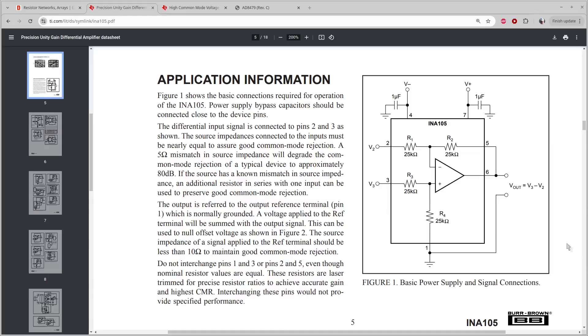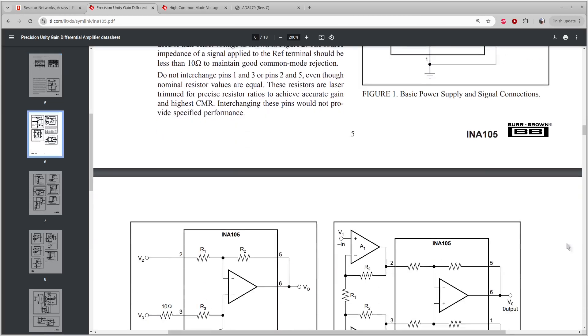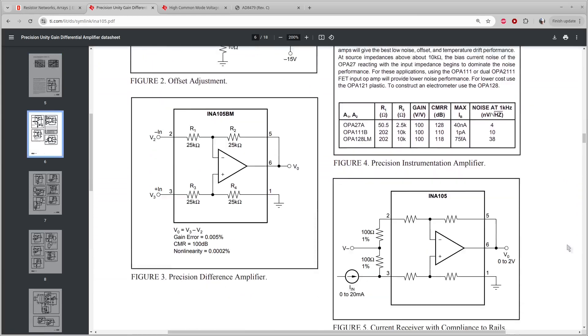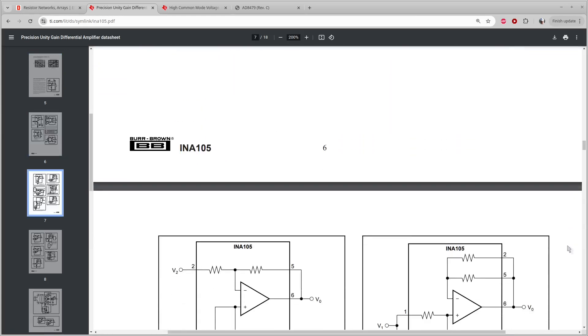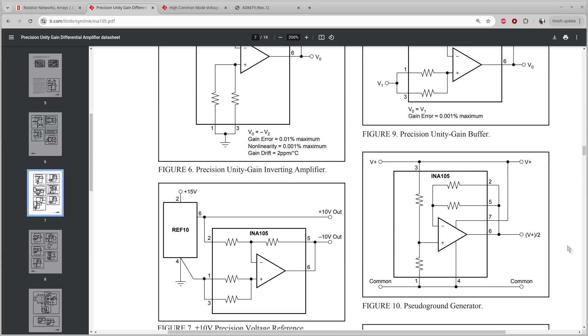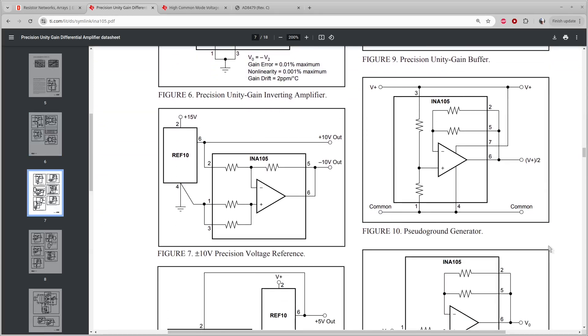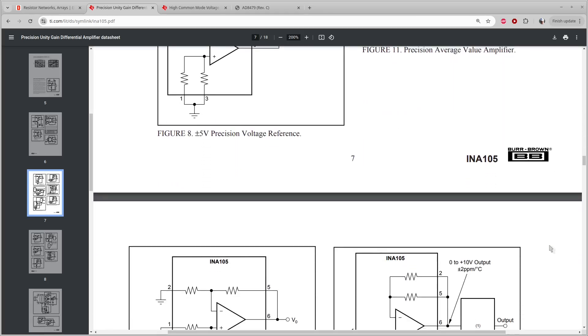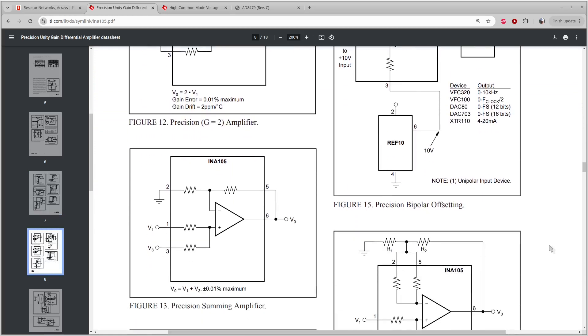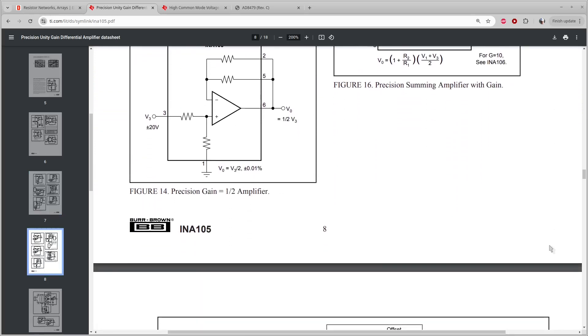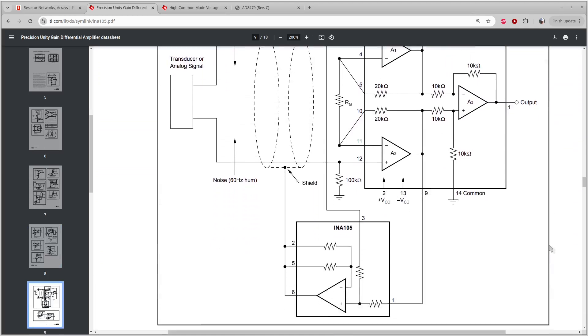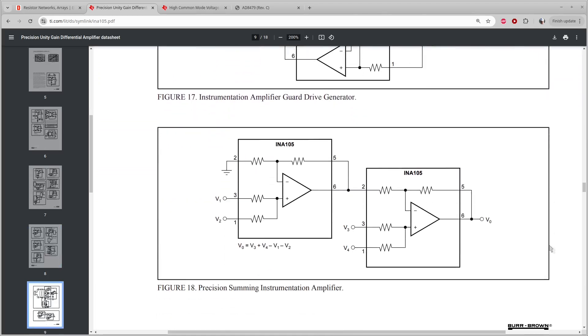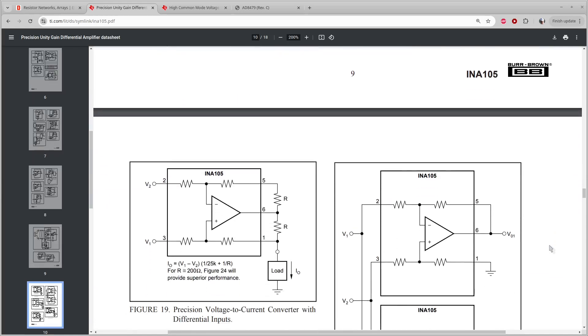There are many other tricks that packaged difference amps can play. By moving the reference and sense connections around, you can make precision amps with gains of plus one, minus two, two, and one-half, precision summing and averaging circuits, rail splitters, and a whole raft of other things. The precisely trimmed resistors can be put into play for a wide variety of precision circuits.